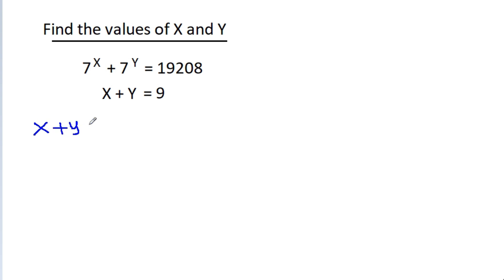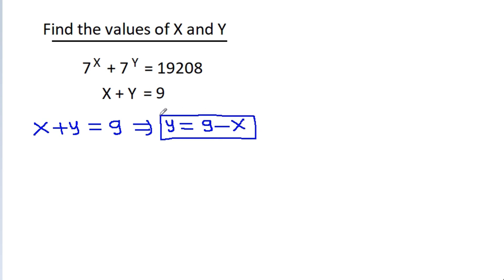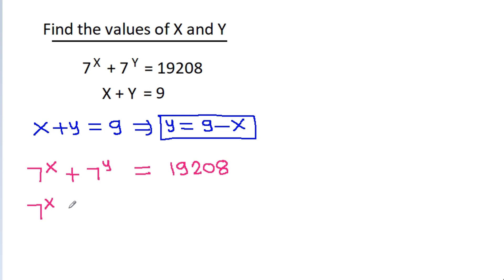We have x plus y is equal to 9, that means y is equal to 9 minus x. And we have 7 power x plus 7 power y is equal to 19,208, and substituting y as 9 minus x we get 7 power x plus 7 power (9 minus x) is equal to 19,208.